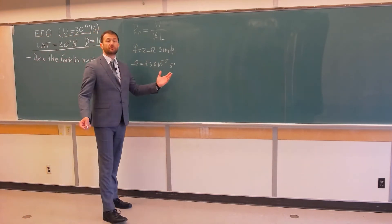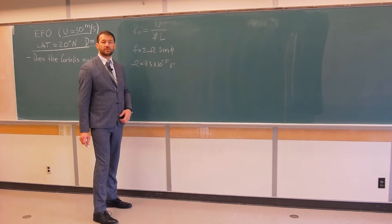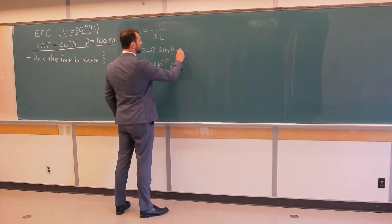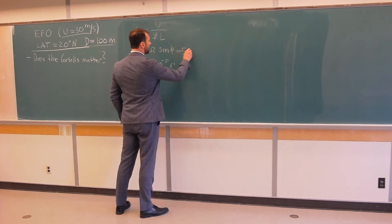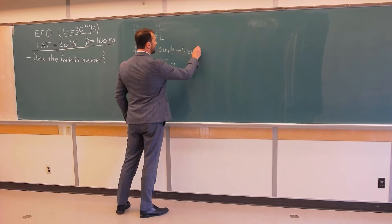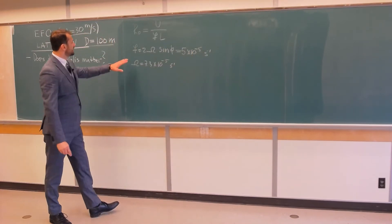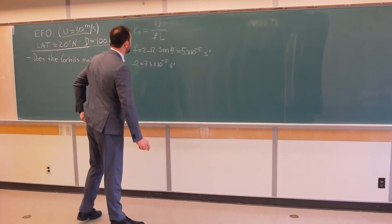All these are, of course, explained separately in my previous videos. So, if you calculate this, I believe you will get that this is approximately 5 times 10 to power negative 5, second minus 1. So, that's the Coriolis parameter, or Coriolis frequency.